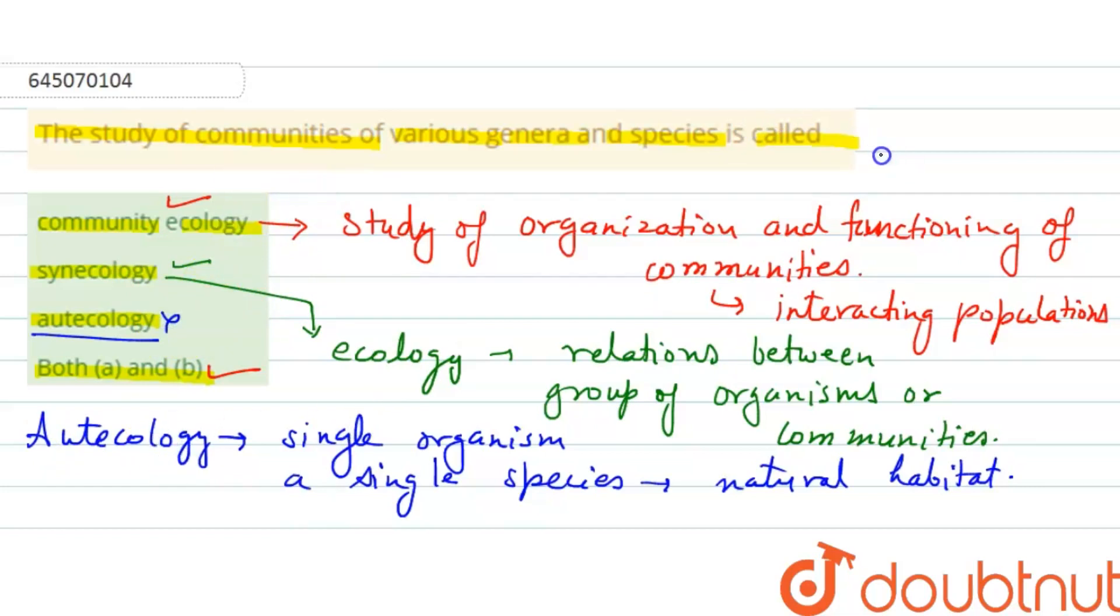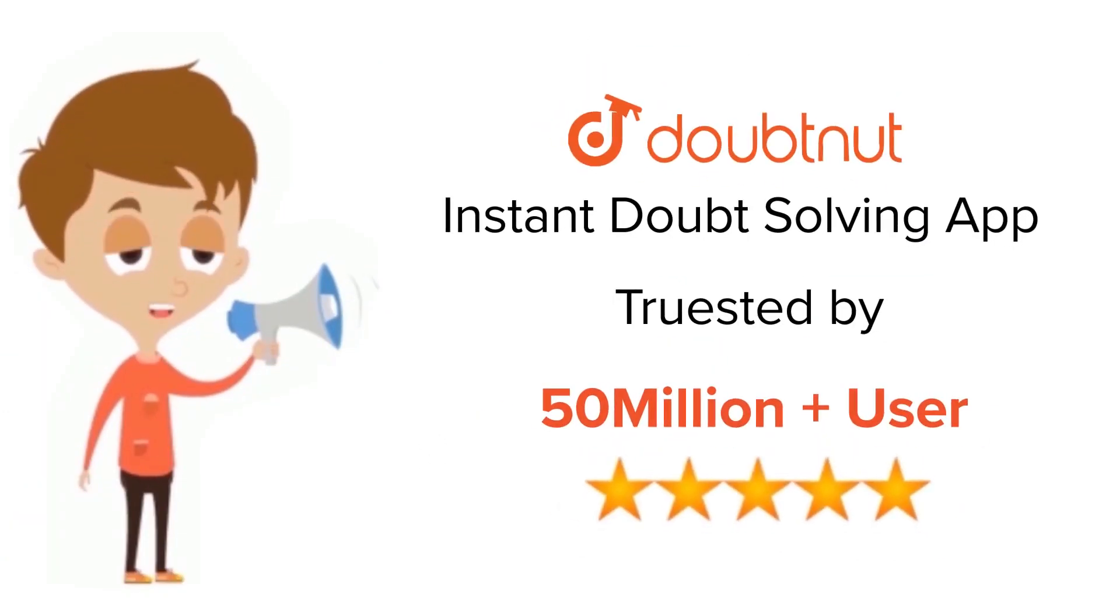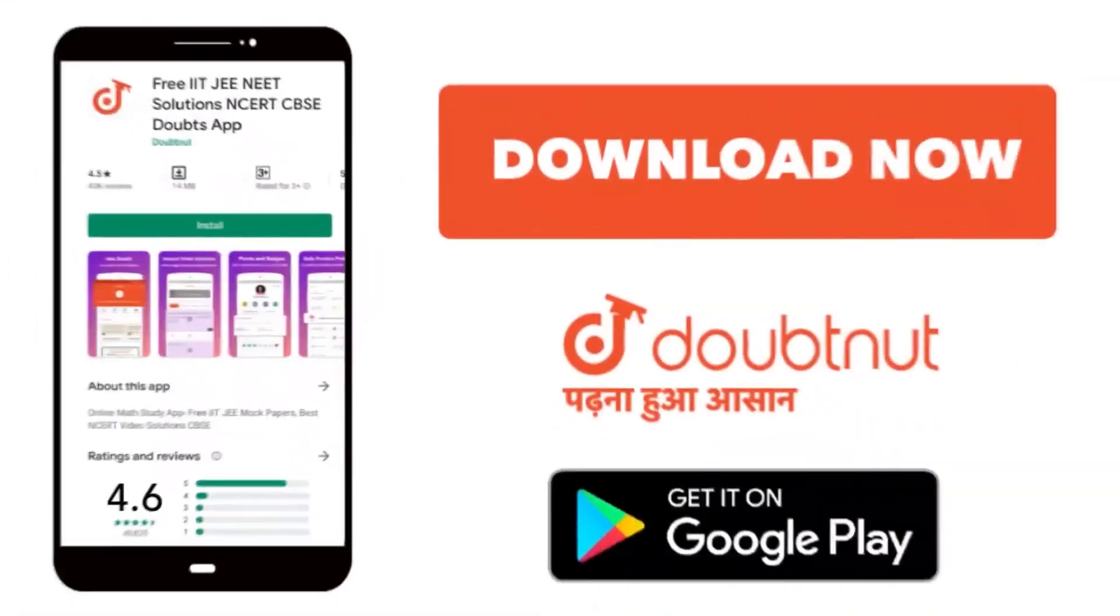So here the right answer is option d, that is both a and b. I hope this will answer your question. Thank you. For class 6 to 12, IIT-JEE and NEET level, trusted by more than 5 crore students, download Doubtnet app today.